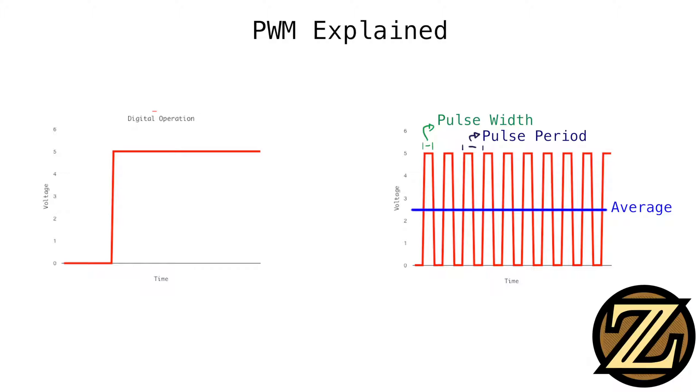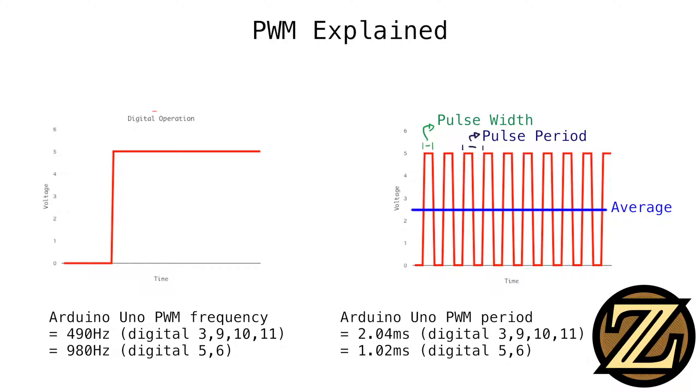Although truly we are just changing between zero and five volts quickly. The UNO's PWM frequency is 490 Hz on pins 3, 9, 10, and 11, and 980 Hz on digital 5 and 6. This equates to a period of 2.04 and 1.02 ms respectively.